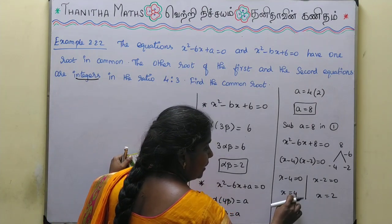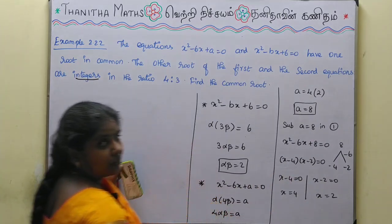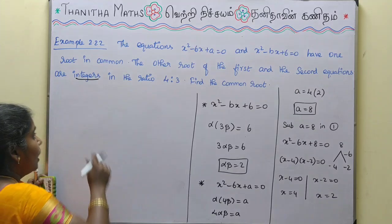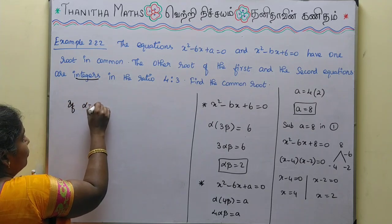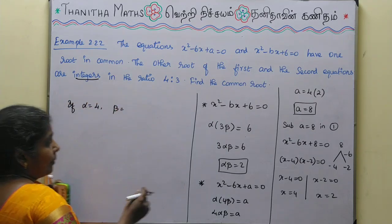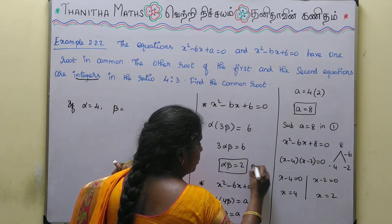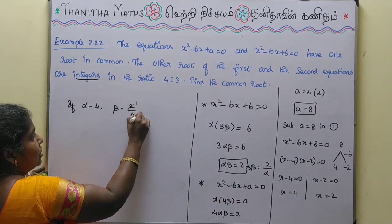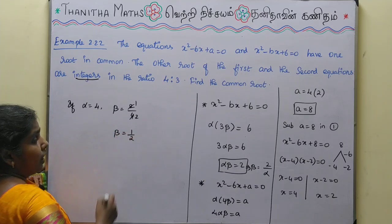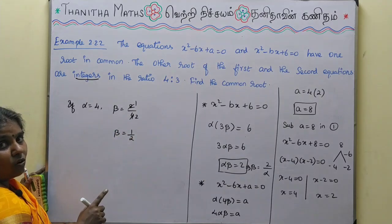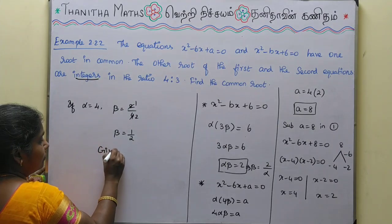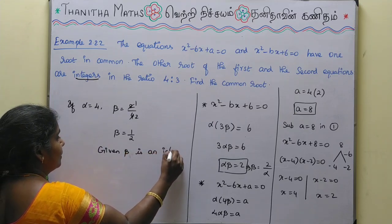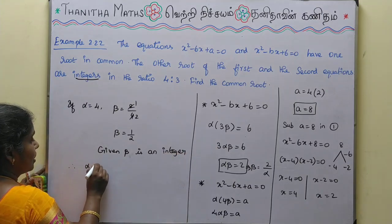If alpha equals 4, then beta equals 2 divided by alpha, which is 2 divided by 4, giving beta equals 1/2. But beta must be an integer, so alpha cannot equal 4. If alpha equals 2, then beta equals 2 divided by 2, which gives beta equals 1, an integer. Therefore, the common root alpha is equal to 2.